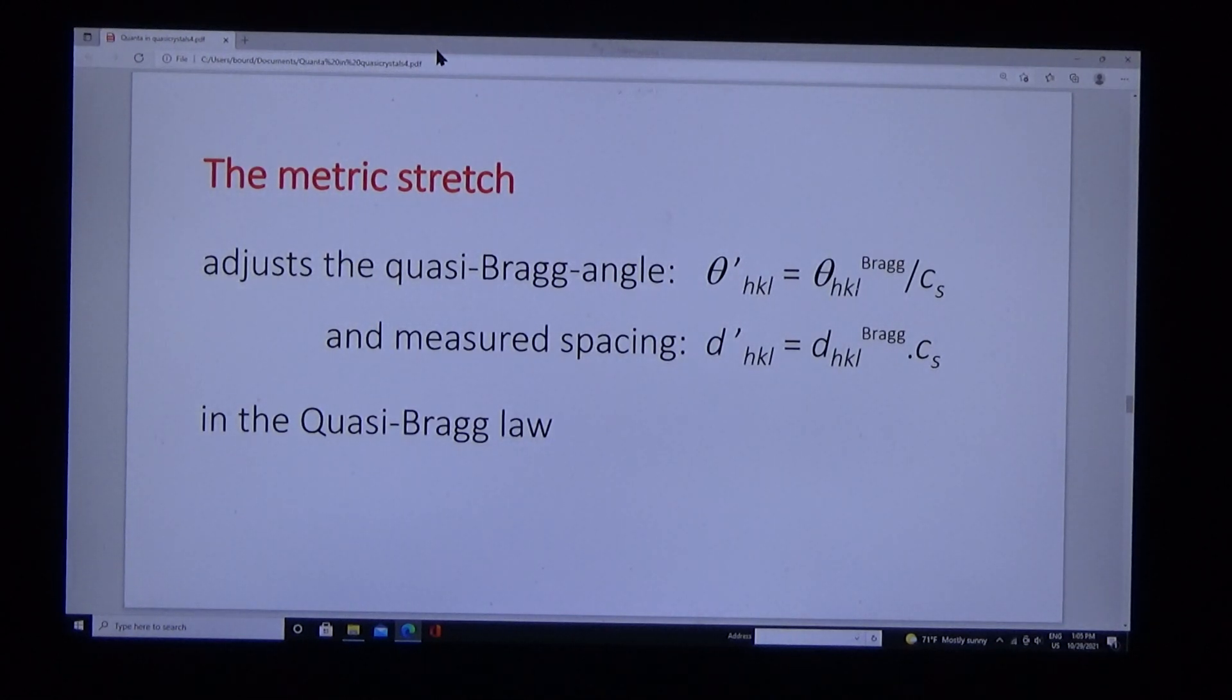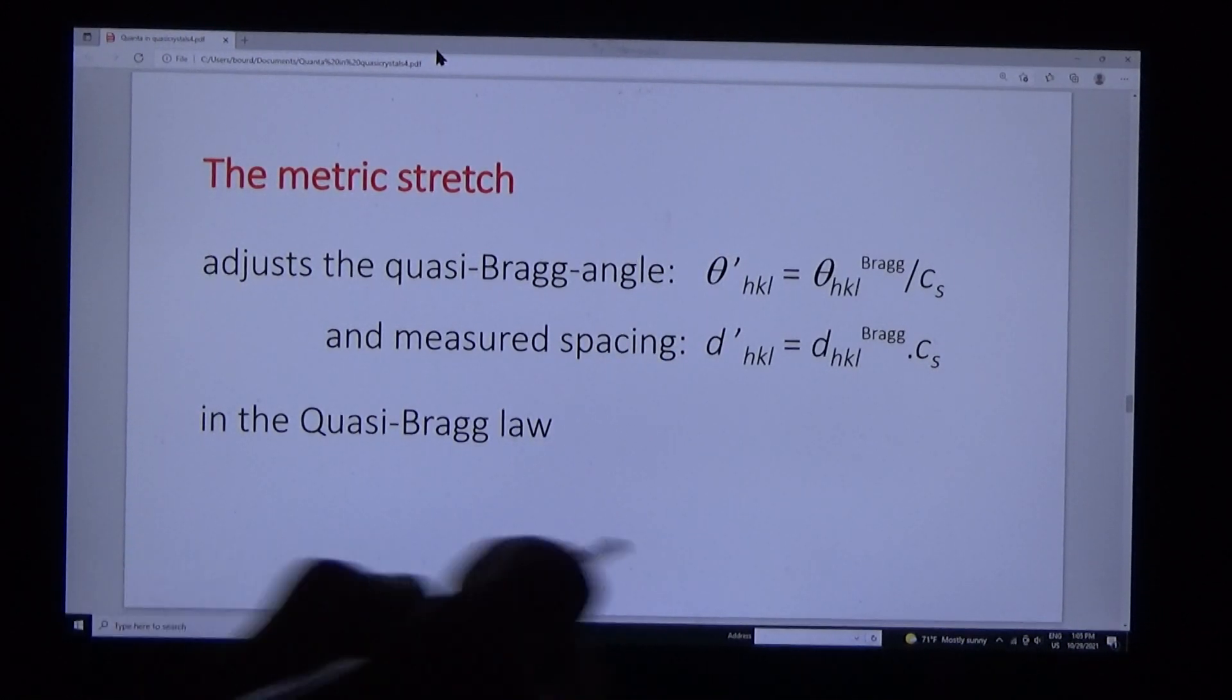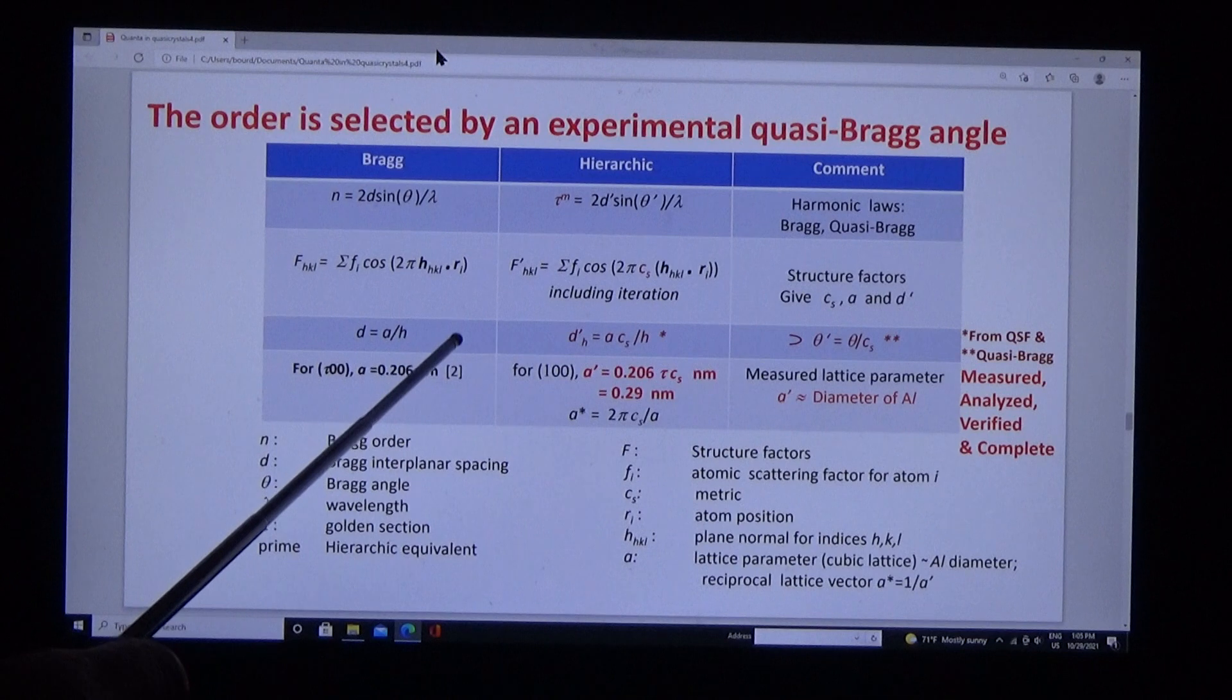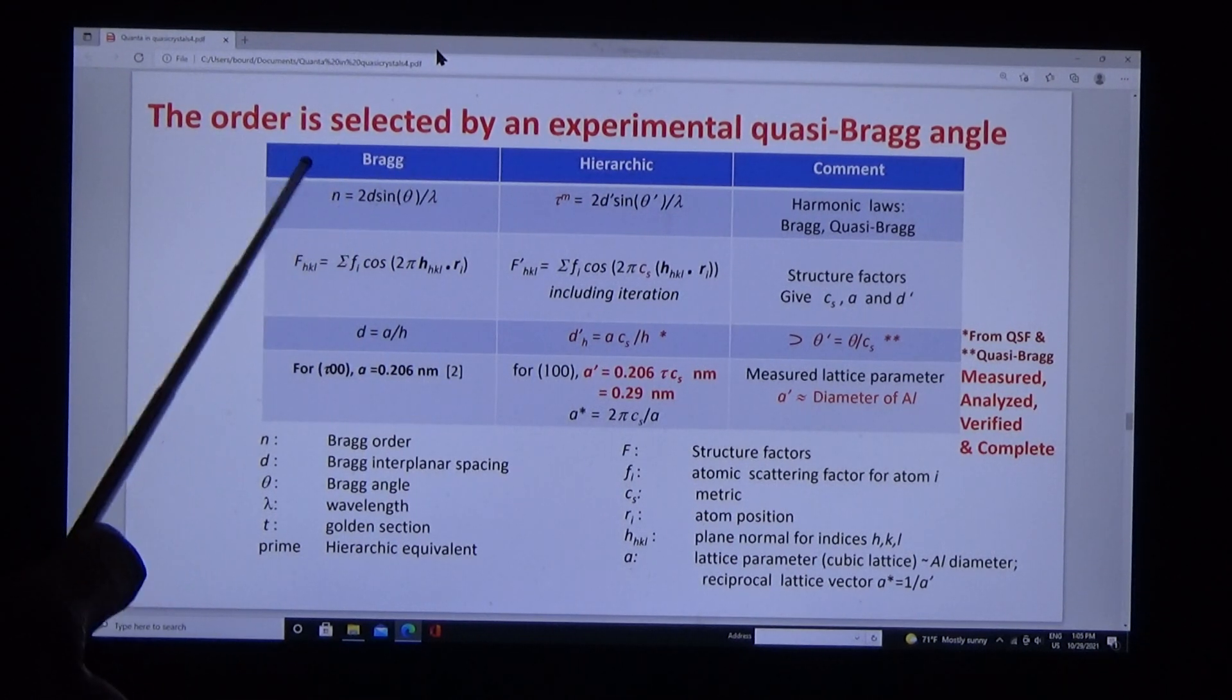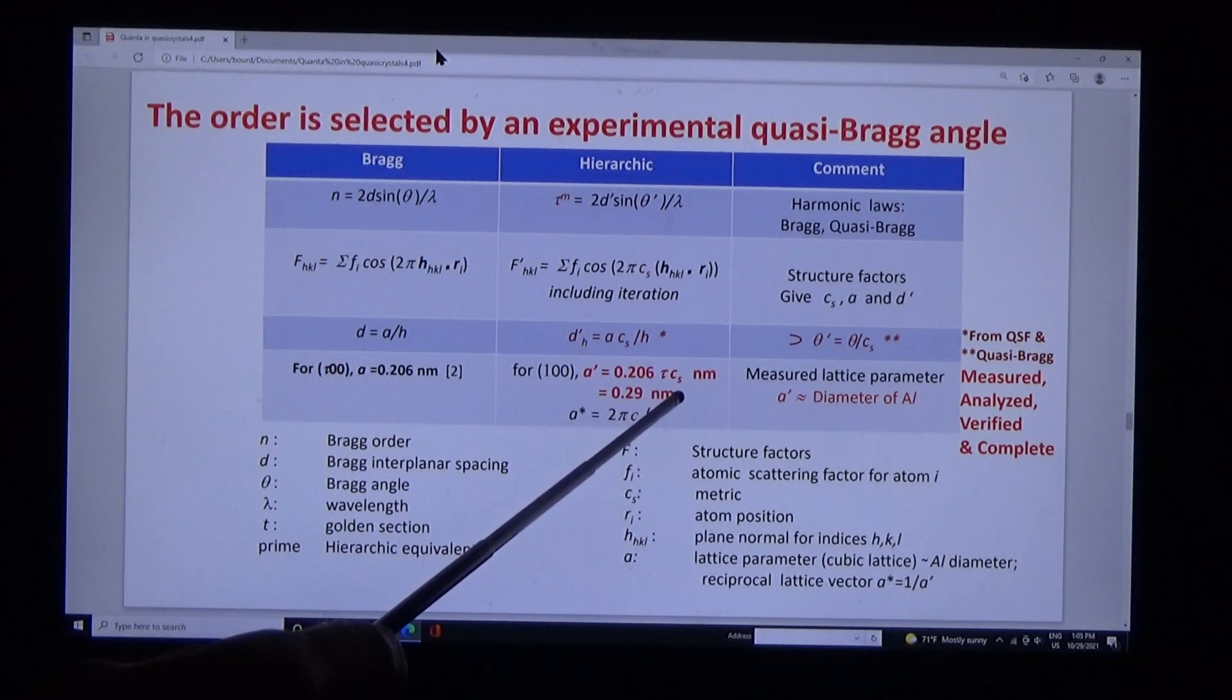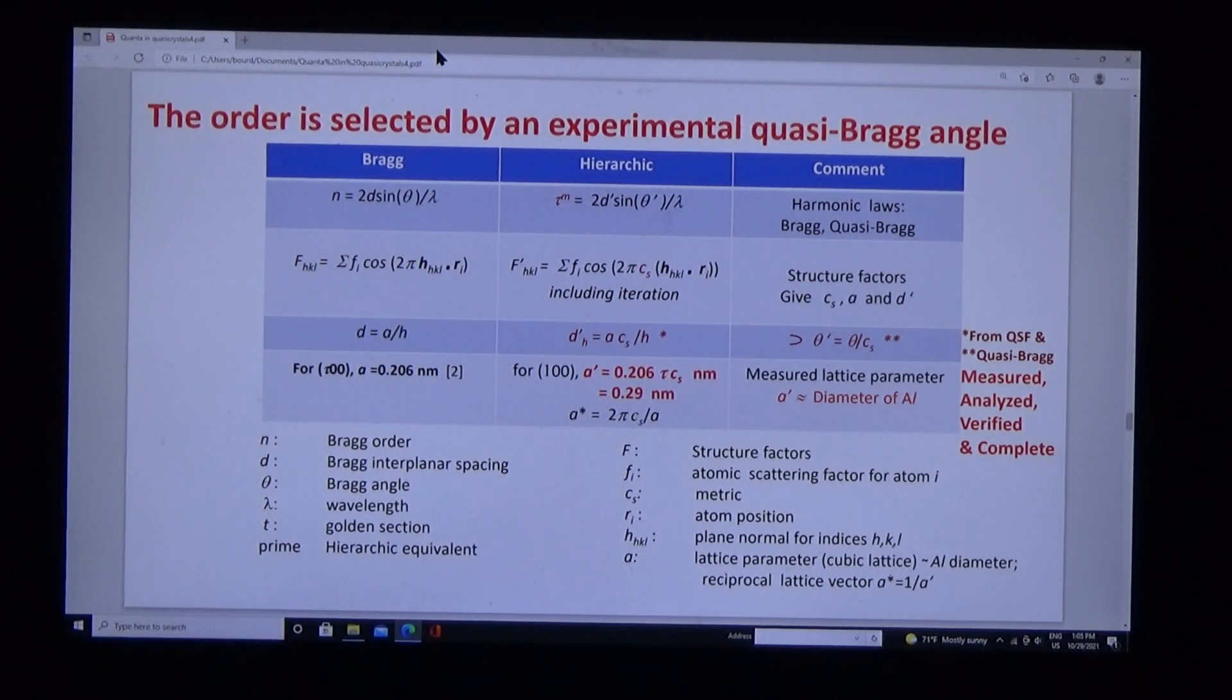With this information, using the metric search, we can adjust the quasi-Bragg angle and the measured spacing and measure the quasi-lattice parameter. Forty years ago, several of us measured the lattice parameter by assuming Bragg's law, because that was all we had. I knew it couldn't be right, but it took me time to appreciate how to make it right with the metric and the index. The answer is very important: 0.29 nanometers.